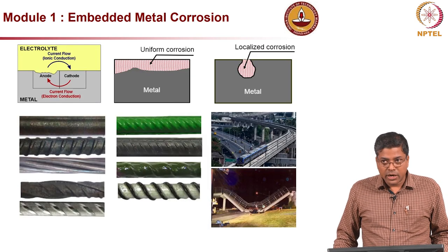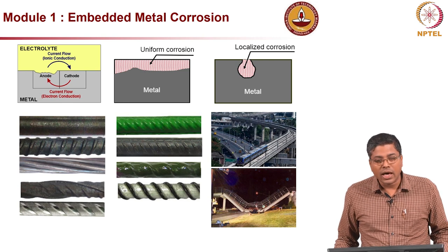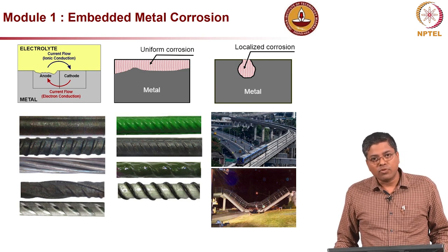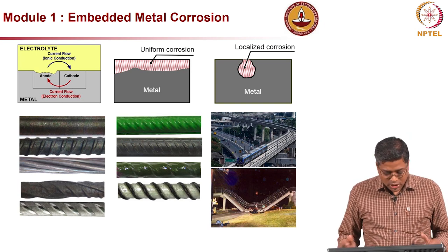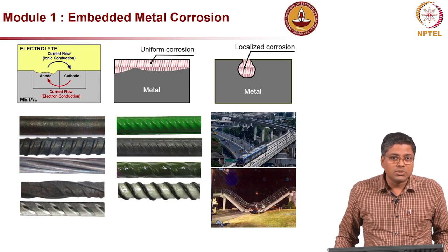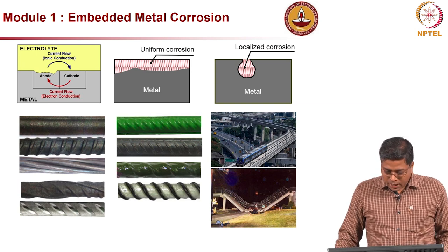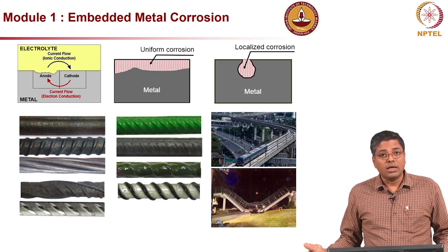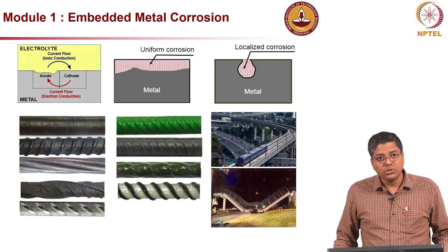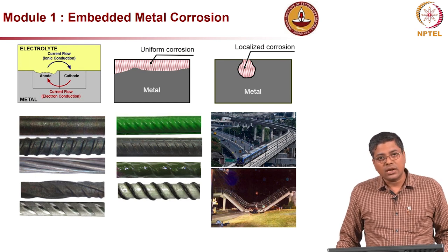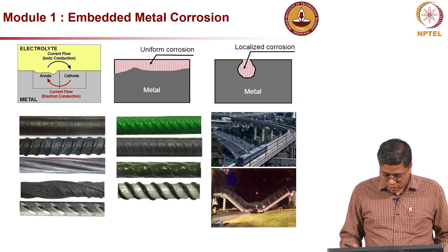In Module 1 we will talk about embedded metal corrosion — first what is corrosion and how it happens, then what types occur in concrete structures: carbonation-induced corrosion and chloride-induced corrosion. We will also look at different types of rebars available in the market, how corrosion mechanisms differ among them, and whether coated rebars — especially non-metallic coatings — are actually good. You will see that they are really not good considering the way those rebars are used in construction today.